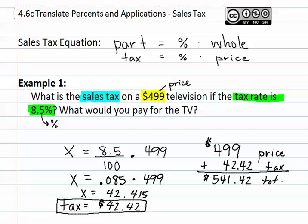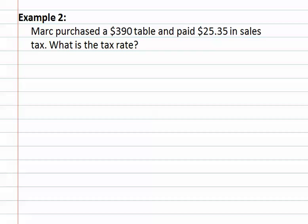This is the total amount, which answers the second question. In example two, Mark purchased a $390 table and he paid $25.35 in sales tax. He wants to know what was the tax rate that he paid. First, we need to identify the different numbers in this question. We have a $390 table, which is our original price, and $25.35 paid in sales tax, which is the tax amount.